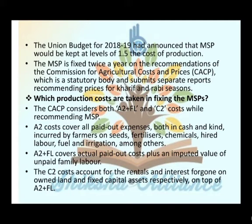A2 cost covers all paid-out expenses both in cash and kind, incurred by the farmer on seed, fertilizer, chemicals, hired labor, fuel and irrigation among others. A2+FL covers actual paid-out cost plus an imputed value of unpaid family labor. C2 cost accounts for the rental and interest foregone on owned land and fixed capital assets respectively, on top of A2+FL.